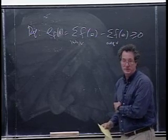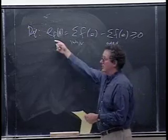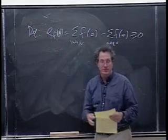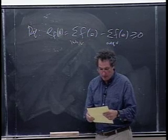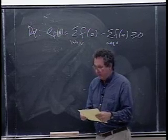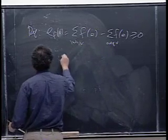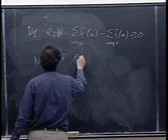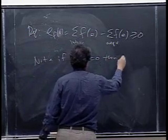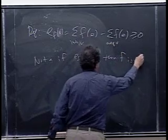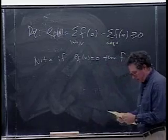But that's the excess that, you know, it really would be better to call it the leakage or something, because that's the amount that disappears. But anyway, it's called the excess at V. And as we noted a minute ago, if EF of V equals zero, then F is a flow.